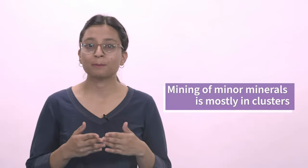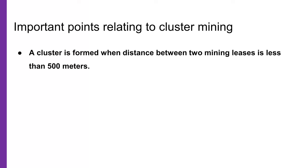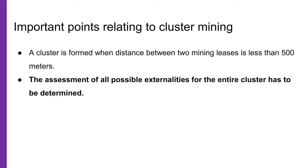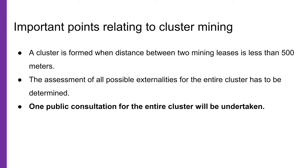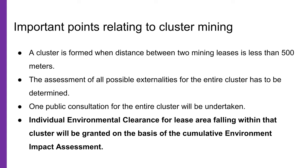It is important to remember that mining of minor minerals is mostly in clusters. As per EIA Notification 2006, a cluster is formed when the distance between the peripheries of one lease is less than 500 meters from the periphery of another lease in a homogenous mineral area. In case of cluster mining, the assessment of all possible externalities for the entire cluster has to be determined. The assessment shall consist of the carrying capacity of that cluster, transportation and related issues, replenishment and recharge issues, and a geohydrological study. There will be one public consultation for the entire cluster. Individual environmental clearance for lease areas falling within that cluster will be granted on the basis of a cumulative environment impact assessment.